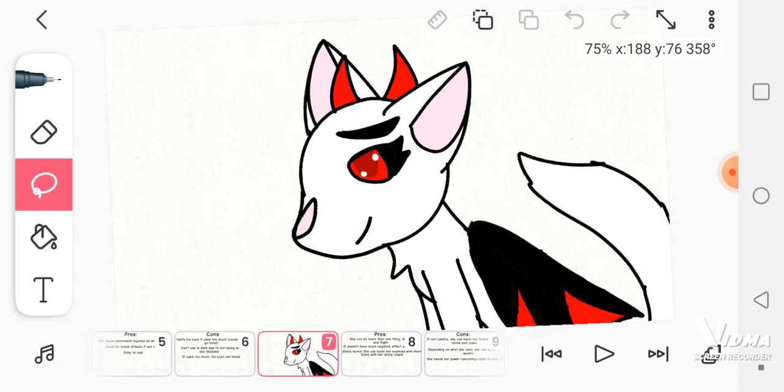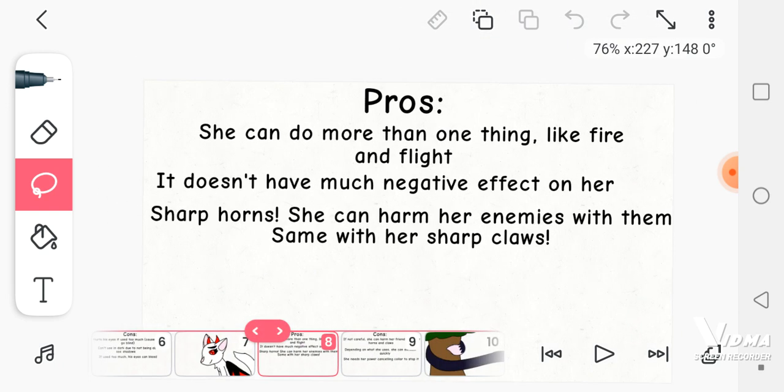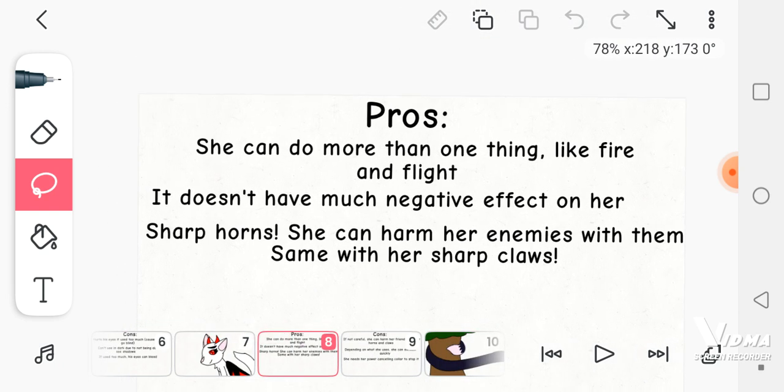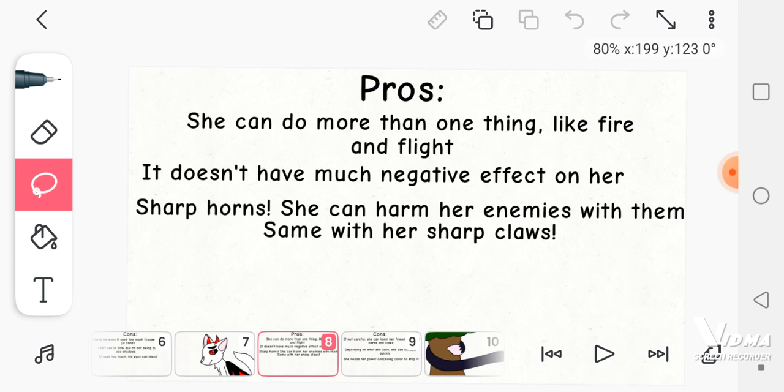And then there's Snowball, who just has straight up demon powers. Pros, she can do more than one thing, like control fire and fly. And it does not have much negative effects on her. And three and four, she has sharp horns which she can harm her enemies with, and the same goes for her claws.